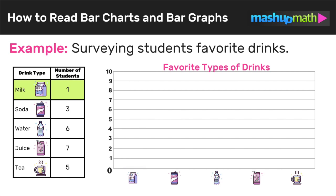Let's start with milk. Based on the chart, only one student chose milk as their favorite drink, so we construct a bar above the milk symbol that goes from zero to one. Next, for soda, three students chose soda as their favorite drink, so we make a bar above the soda icon that goes from zero up to three.